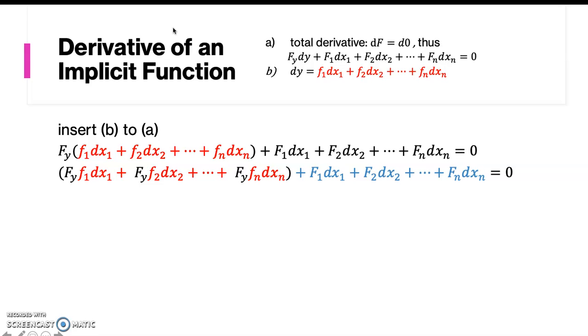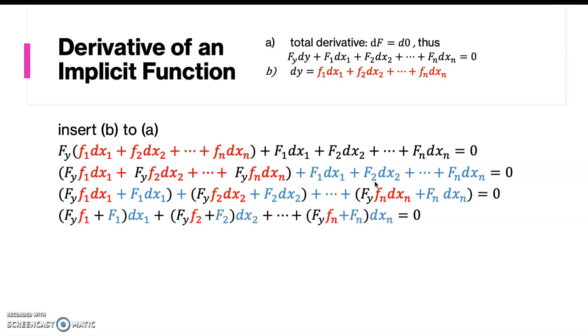And we now combine the one in the parenthesis with the blue part, because we have dx1 and dx1, so we combine it, dx2 with dx2, and we get this equation. We simplify further and obtain this form.